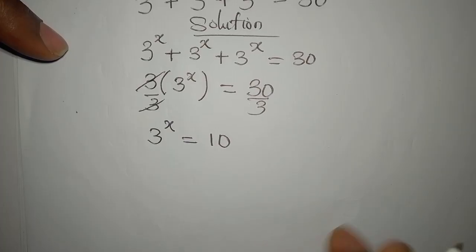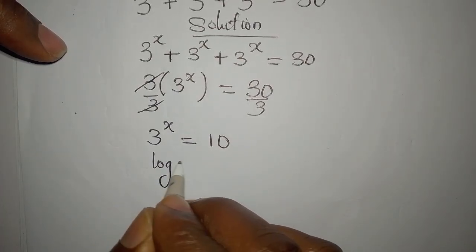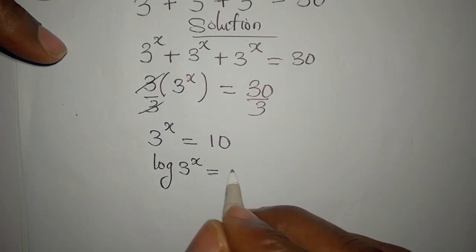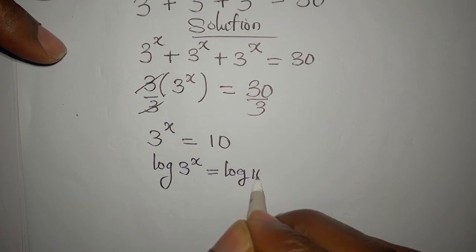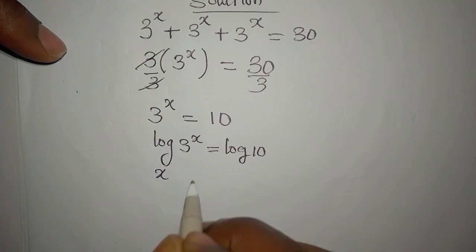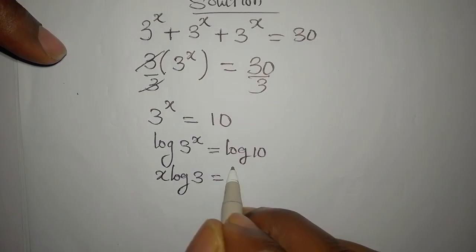Okay, so from here we'll take the log of both sides. Log 3 to the power of x is equal to log 10. Now the power here will go behind so we have x log 3 to be equal to log 10.